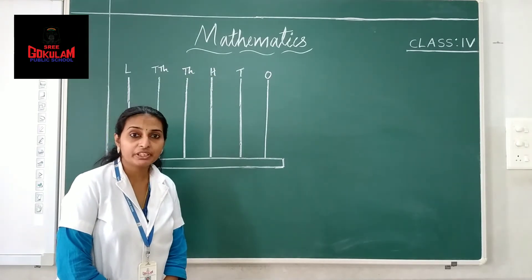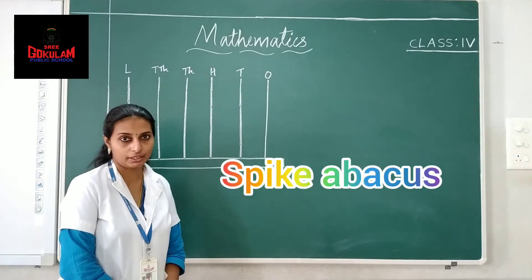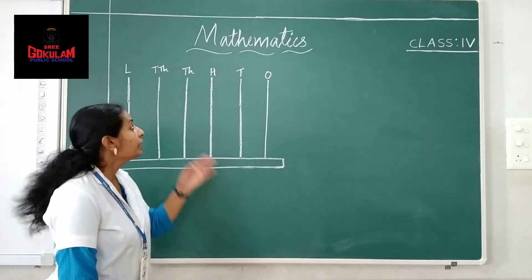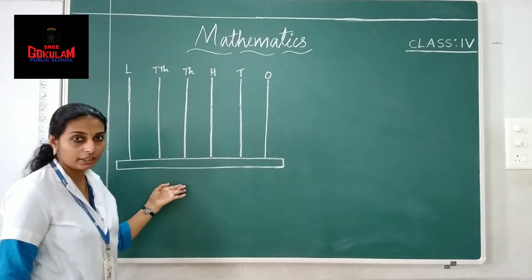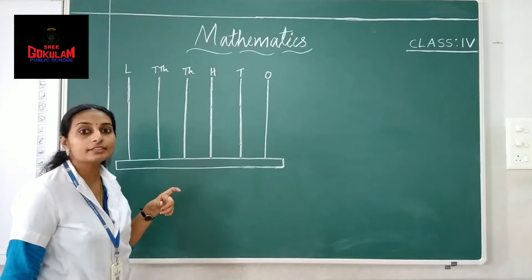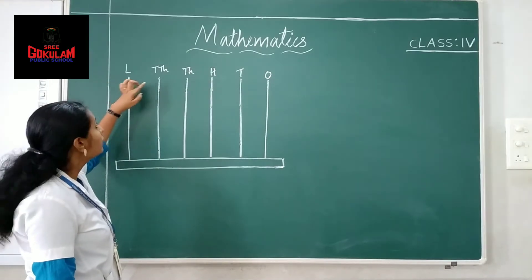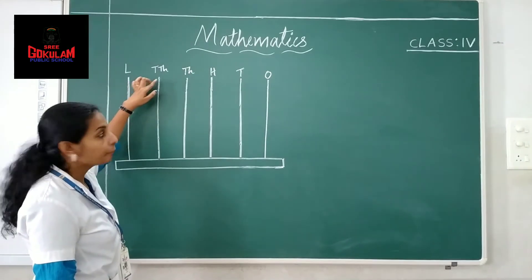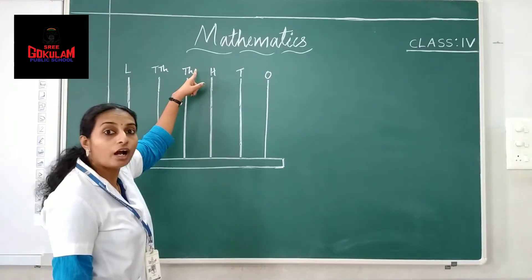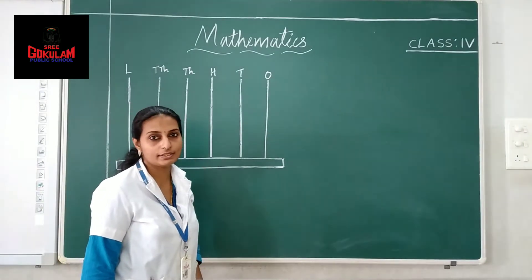See children. Next, we are going to discuss about how to represent a 6-digit number in a spike abacus. Here we have a spike abacus. Since we are going to represent 6-digit number, we need 6 spikes. Here we have this spike represents lakh place. And this is ten thousand place. And this spike represents thousand place. This spike represents hundred place. And this one represents tens. And this one ones.